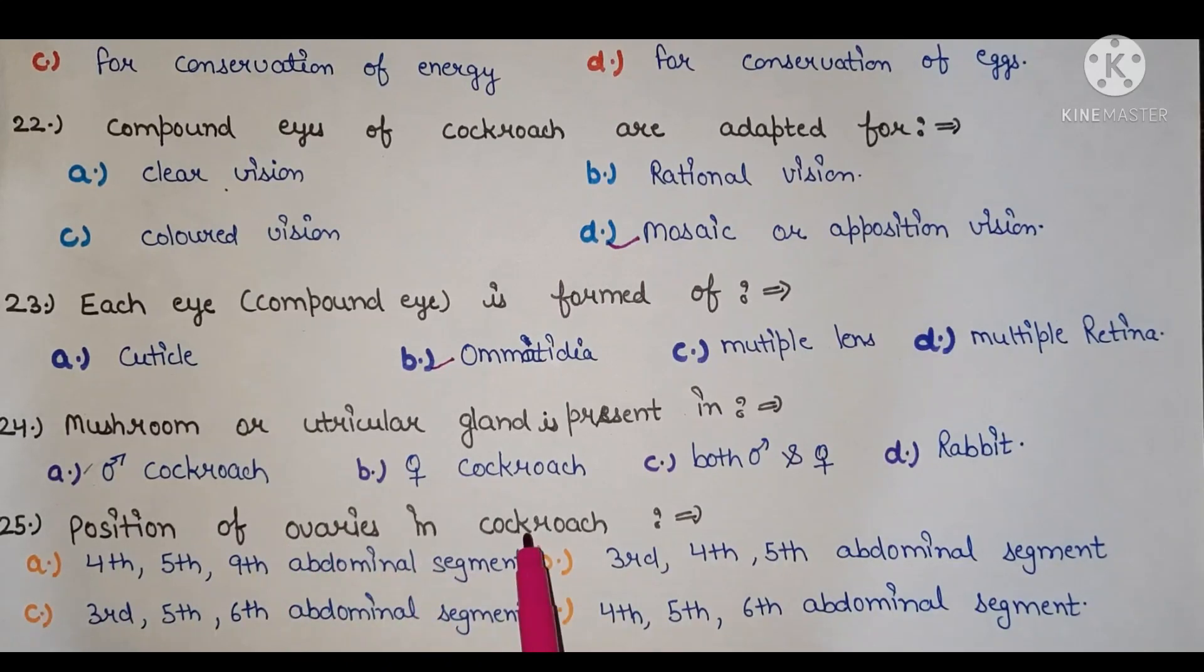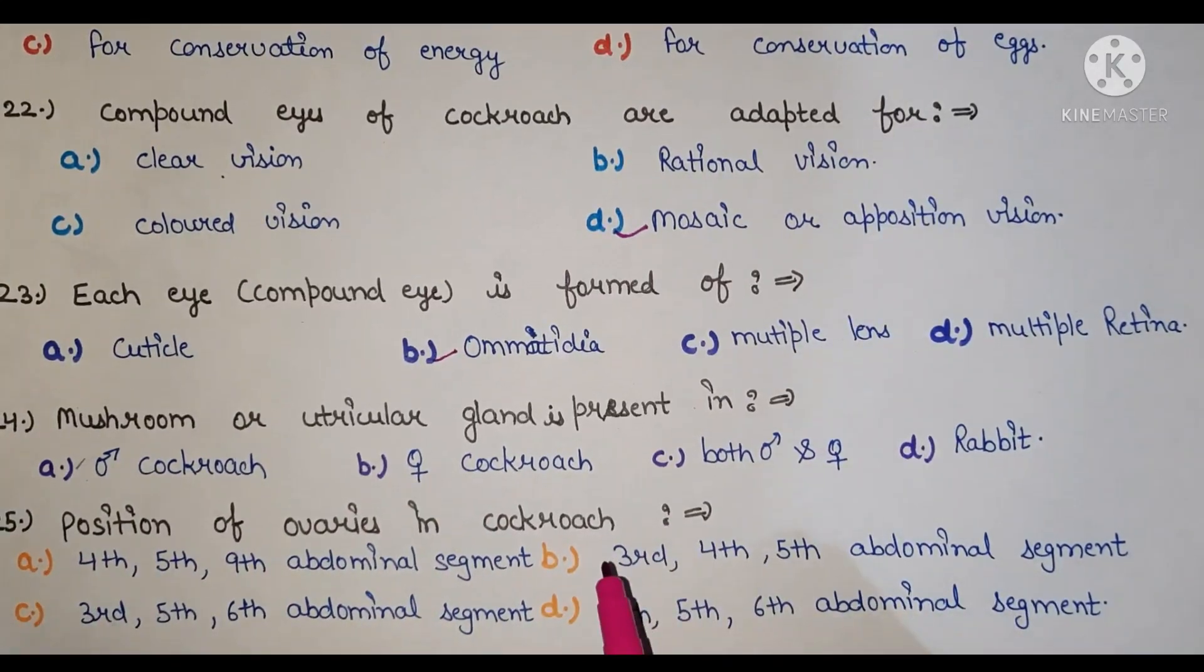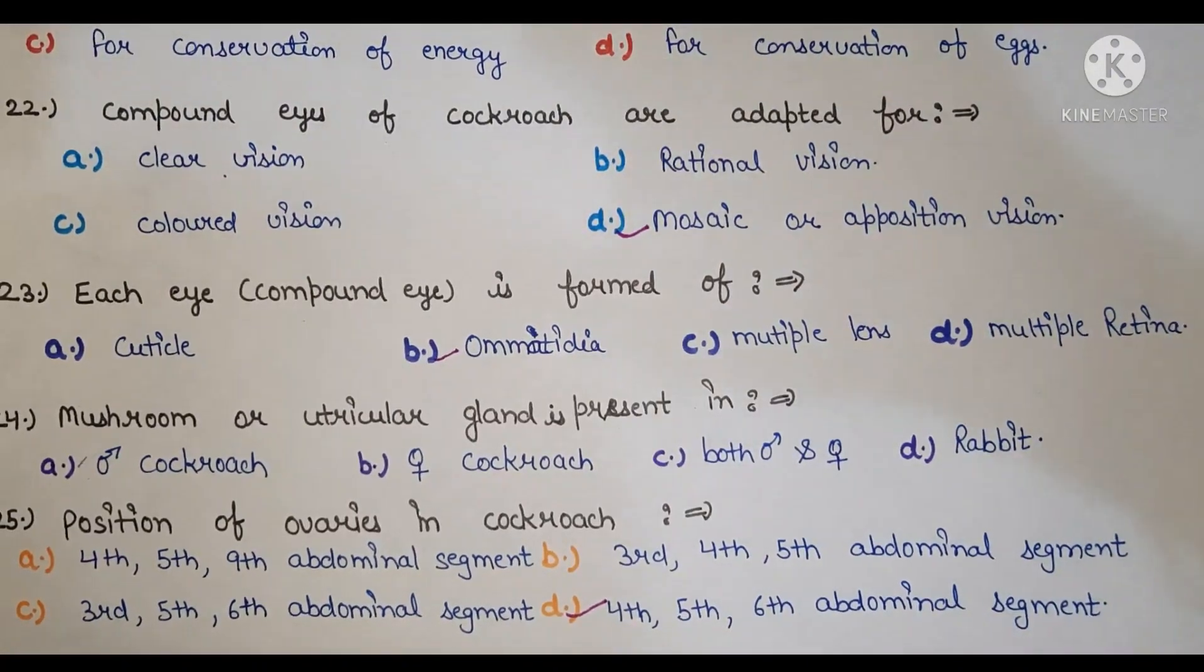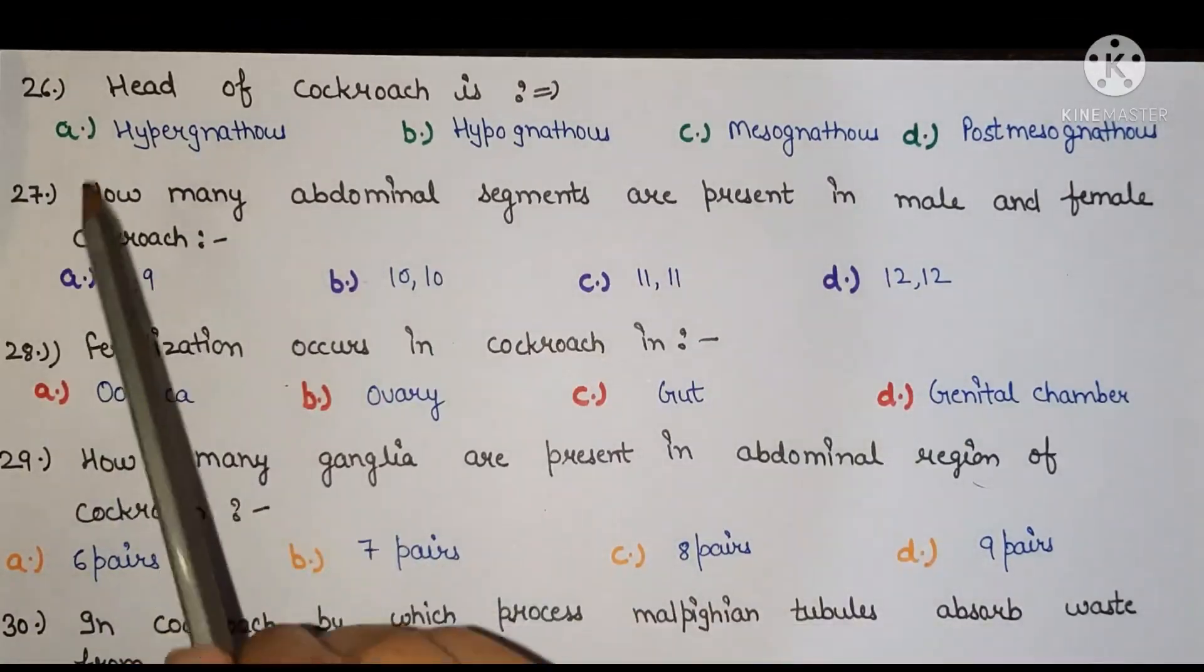Next, position of ovaries in cockroach. And the right answer is 4th, 5th, 6th abdominal segment.